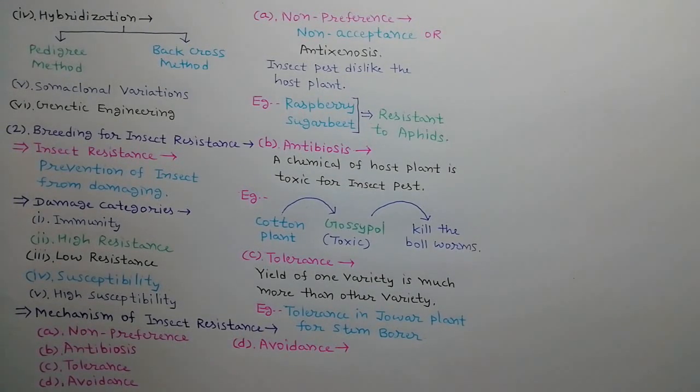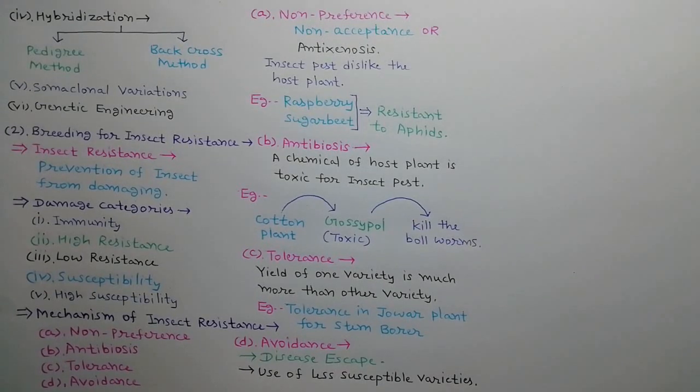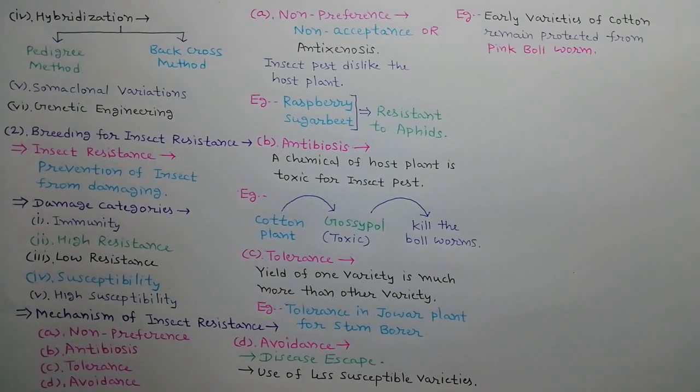Fourth mechanism is avoidance. This mechanism is also called disease escape. In this mechanism, those plant varieties are grown which are less susceptible during the time of attack of insects. For example, early varieties of cotton remain protected from attack of pink boll worm.